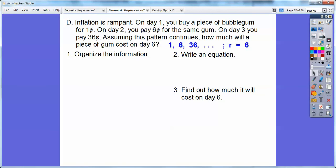We're going to write an equation and find out how much it will cost on day six. Well, let's go ahead and list the numbers. It goes from one to six, one cent for the first day, six cents for the second day. It's a little bit easier to see when you see this. This is just going times six times six. So remember, it went from one cent to six cents to 36 cents. That's these numbers right here. So that tells me R equals six.